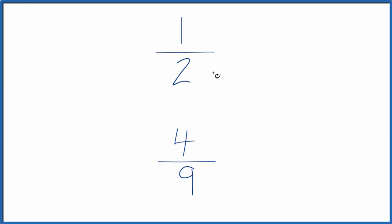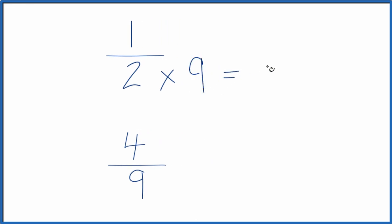So why don't we do this? Why don't we multiply two times nine? Two times nine, that's 18. Down here, we'll multiply nine times two, because nine times two, that's 18. Now we have the same denominator.